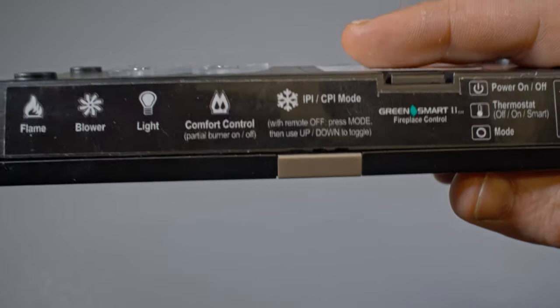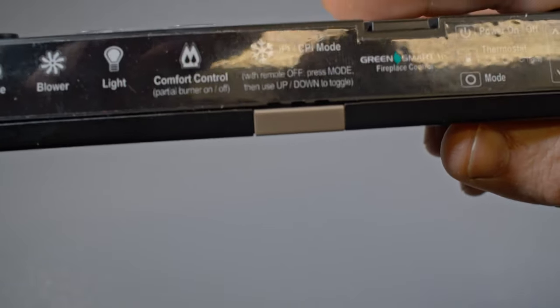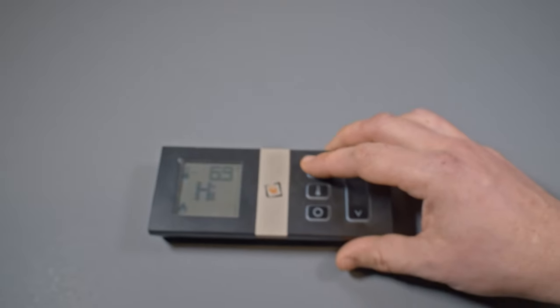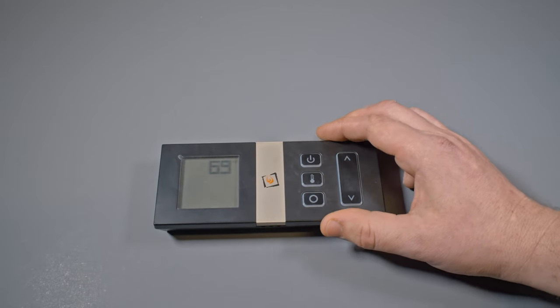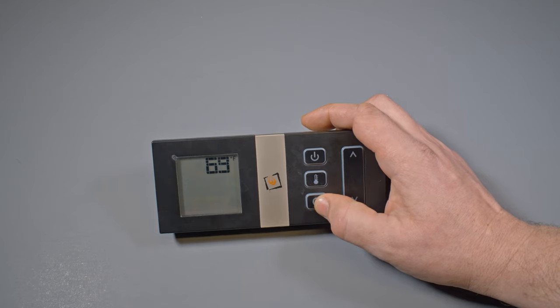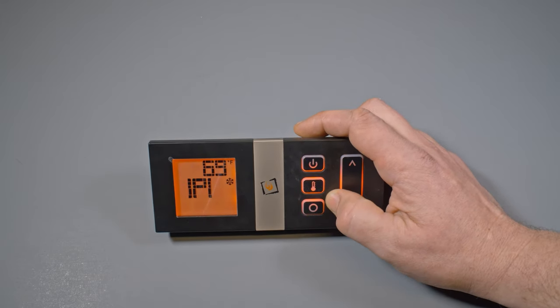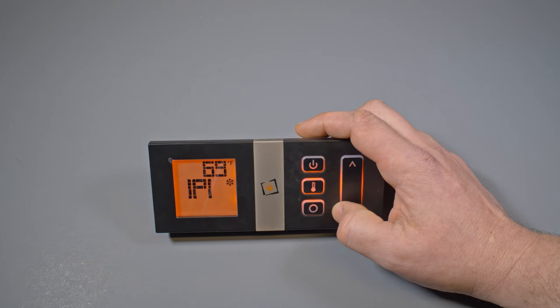I'm showing this IPI, CPI mode a little bit because that mode is pretty common for us to use up here in the Northeast. Putting it in CPI mode is something that we typically recommend people to do starting in really the end of October, early November, and keeping this mode on through the winter.